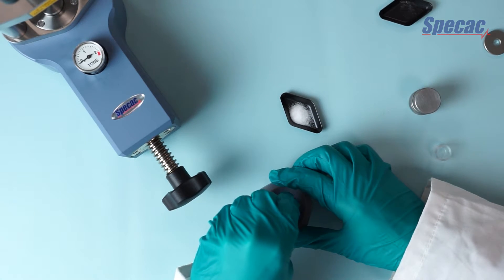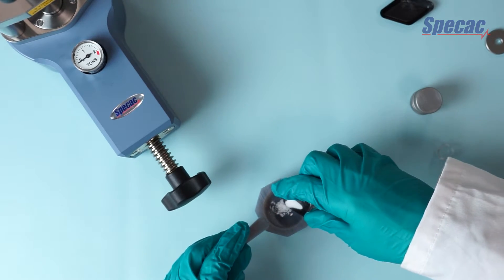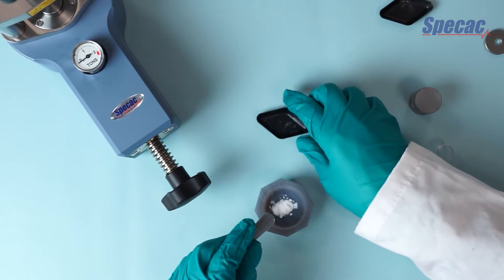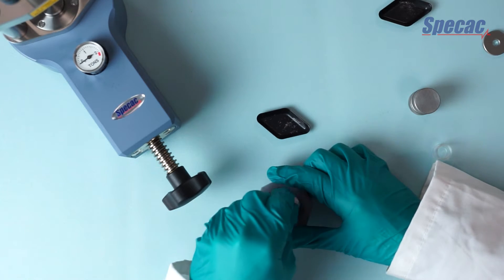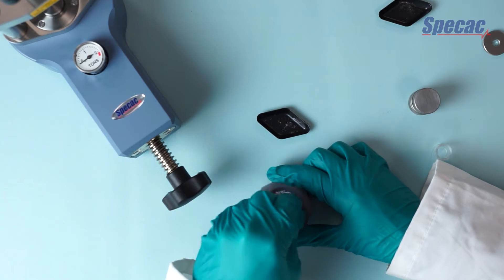We use the pestle and mortar to grind them into a homogenous mixture. We don't want to grind them too much or too long because that opens up the crystal facets of the KBR powder to moisture and will show up in our spectra. So just gentle grinding for a few minutes to mix them together thoroughly.